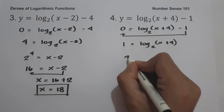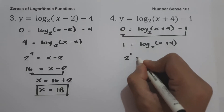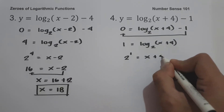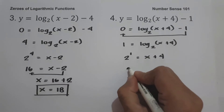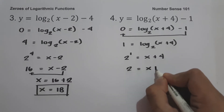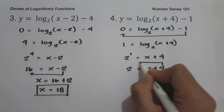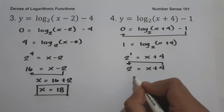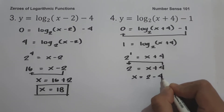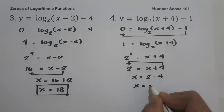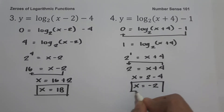Let us convert this into exponential form: 2 raised to 1 equals x + 4. Since 2 raised to 1 is 2, we have 2 equals x + 4. Moving 4 to the other side: x equals 2 minus 4, and 2 minus 4 is negative 2. Therefore negative 2 is the zero of the given function.